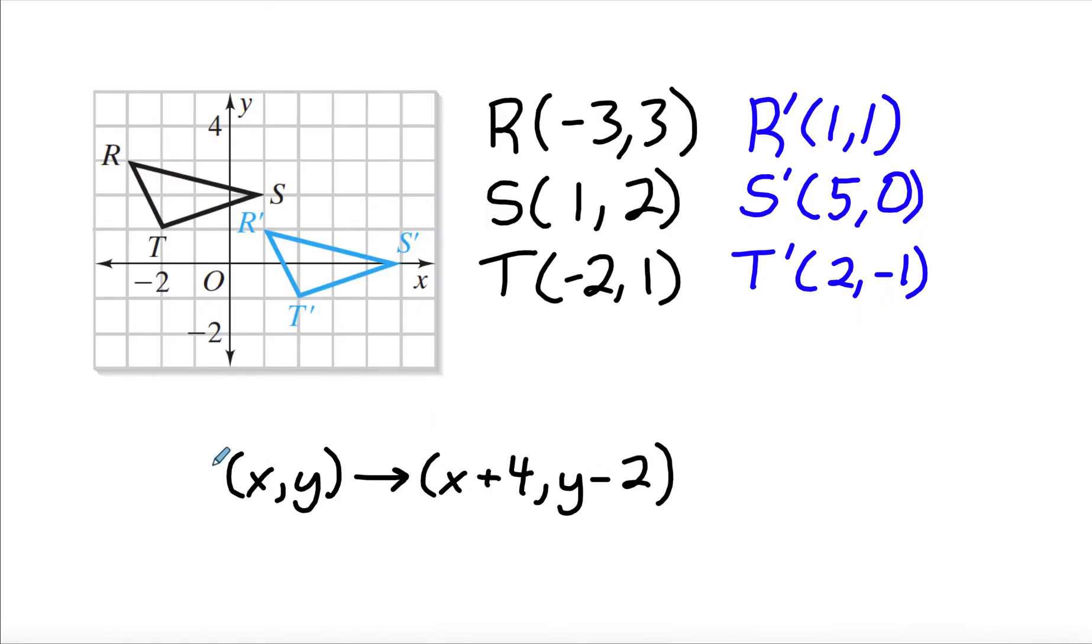So this is our rule. So we state X and Y, draw the arrow. And then since this one moves to the right four, X plus four. And since it moves down two, Y minus two.